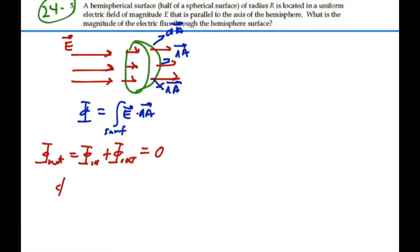So our influx, or our outflux, is what we want, is going to be the negative of our influx.